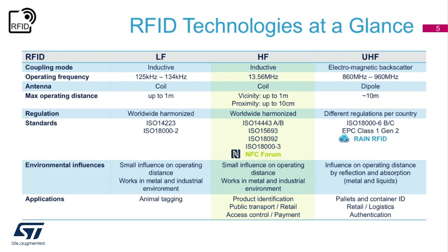On the left of the chart you will see the LF or low frequency band. Typically LF RFID systems operate at 125 kHz, although there are some that operate at 134 kHz. This frequency band provides a short read range, and typical applications for LF RFID include access control and livestock tracking.